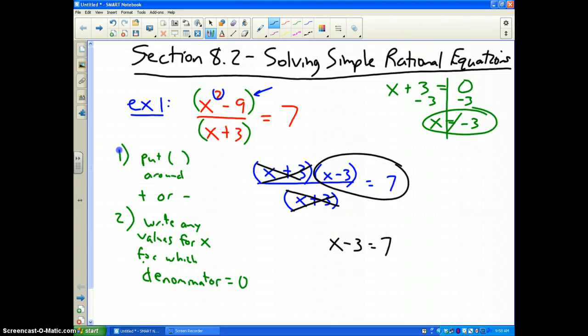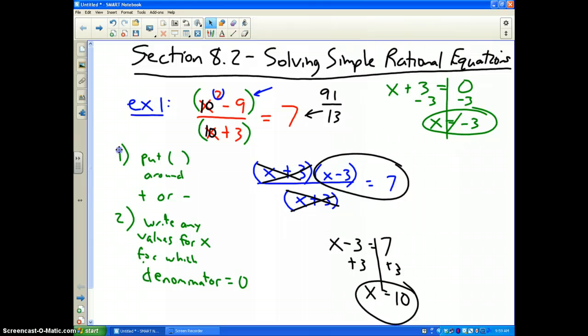x minus 3 equals 7. I add 3 to both sides and I find out my answer to this problem is 10. And if I put 10 in here for x, 10 squared is 100. Minus 9, I get 91 on the top. And if I put 10 in here, 10 plus 3 is 13. 91 divided by 13 is 7. And it checks. So, there you go. That's how you solve a simple rational equation.